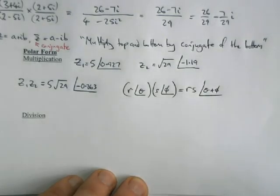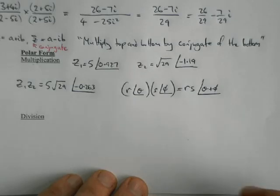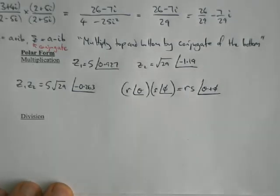And that's all there is to it. That's probably a lot easier than doing the multiplication in cartesian form. You don't have to worry about expanding brackets and sorting out the i² terms. You just do that nice simple process.